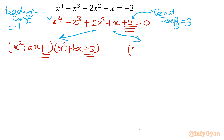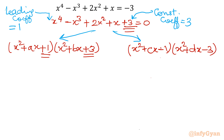The second approach is to consider (x² + cx − 1)(x² + dx − 3), since both signs are negative. Both ways are eligible — we can consider either approach. Now let's verify by taking the product in both cases.